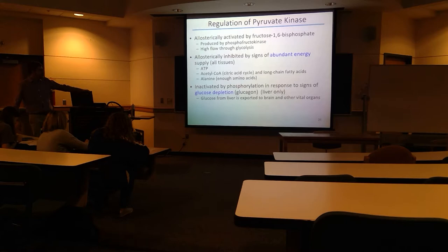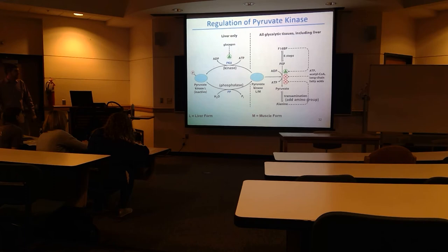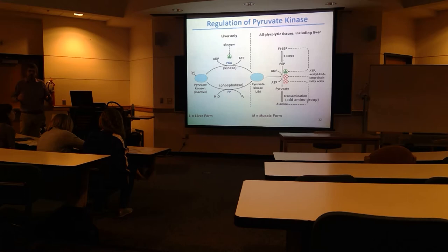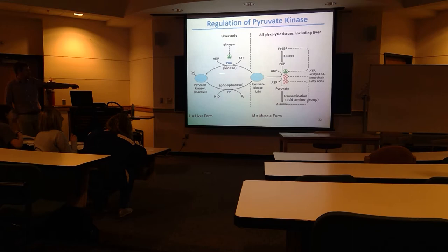This diagram summarizes what happens with that phosphorylation. There are different isoforms of pyruvate kinase — one in the liver and one in muscle. In the liver version, the liver isozyme, pyruvate kinase is responsive to this phosphorylation.